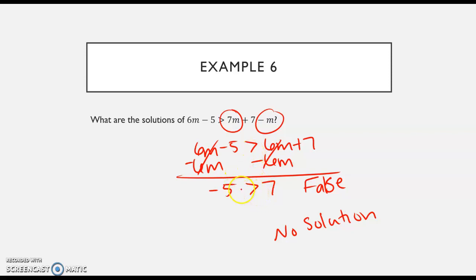If for some reason this symbol was less than, then it would be a true statement. And so this would always work because I'd have negative five is less than seven. And so it would work for all numbers. So we just have to be careful about what we're looking for.